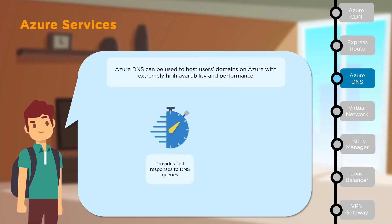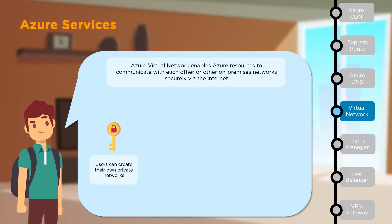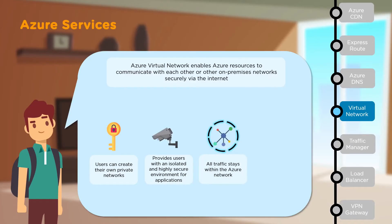Next, we have Azure DNS. Domain Name Service or Azure DNS can be used to host your domains on Azure, providing high availability and great performance by taking advantage of Microsoft's global network. After that, Azure Virtual Network allows Azure resources to communicate with each other or other on-premises networks via the internet, all kept extremely secure. Users can create their own private network for communication in an isolated, secure environment, with all traffic staying entirely within the Azure network, and users can design their own networks.